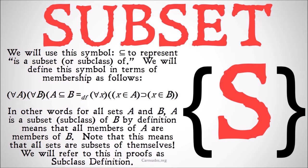We're going to define this symbol in terms of membership as follows. Membership is our very basic primitive notion in set theory, and a lot of other things can be defined in terms of it. So: for all A and for all B, A is a subclass of B is by definition for all X, if X is a member of A, that implies that X is a member of B. So all of the members of A are also members of B — if that's true, then A is a subclass of B.